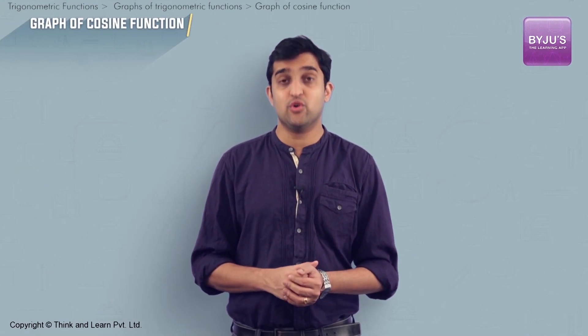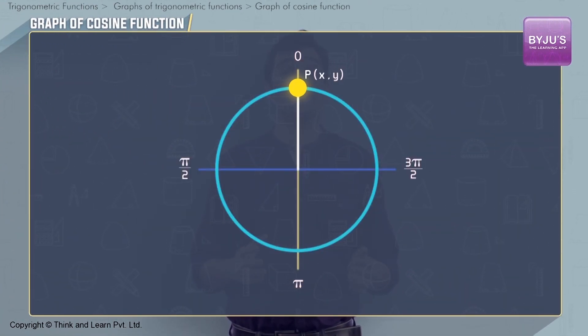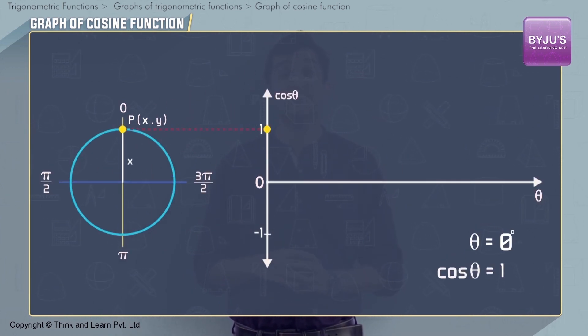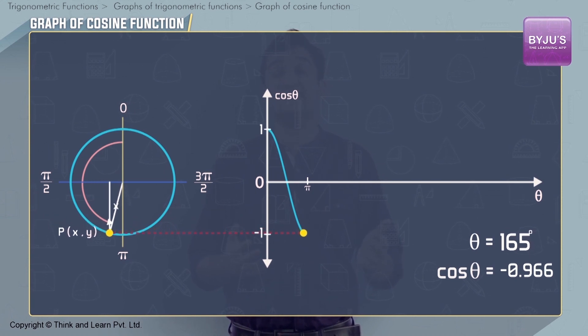In the unit circle, we know that cos theta is nothing but the x coordinate of the point P. It starts at 1 when theta equals 0, decreases to 0 at theta equal to π/2. As theta increases, it becomes negative, and at theta equal to π, it is -1.